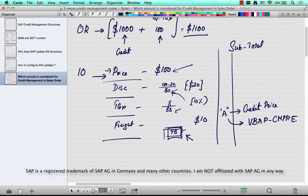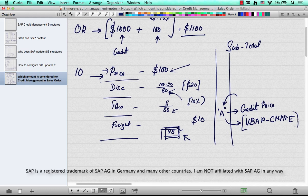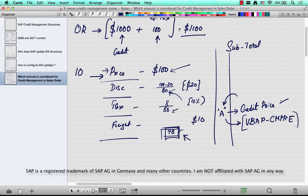The key to let SAP know that this amount should be considered for credit for that line item is to just put a subtotal of A against that row in the pricing procedure. SAP will automatically move it to this field in VBAP called VBAP-CMPRE, or it's also called the credit price.